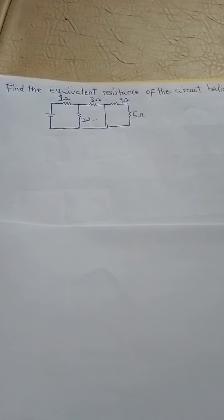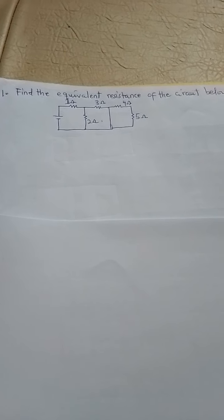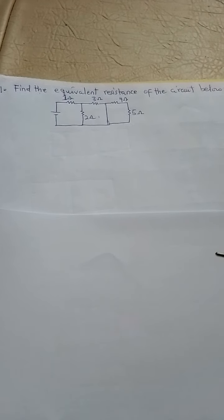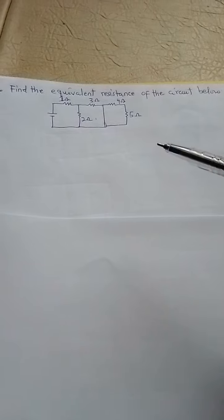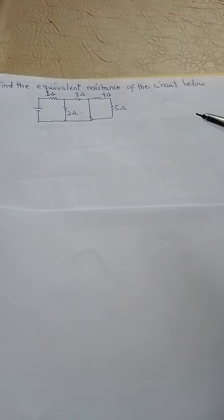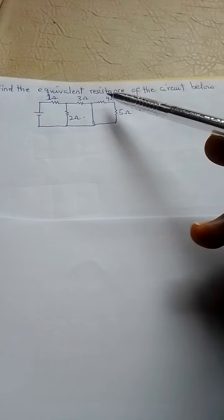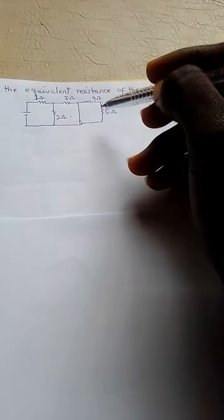Hello viewers, welcome to another session of my tutorial. I have a problem in applied electricity. Find the equivalent resistance of the circuit below. We have a 1 ohm resistor here, 2 ohm, 3, 4, 5, and this is a branch without any resistor.